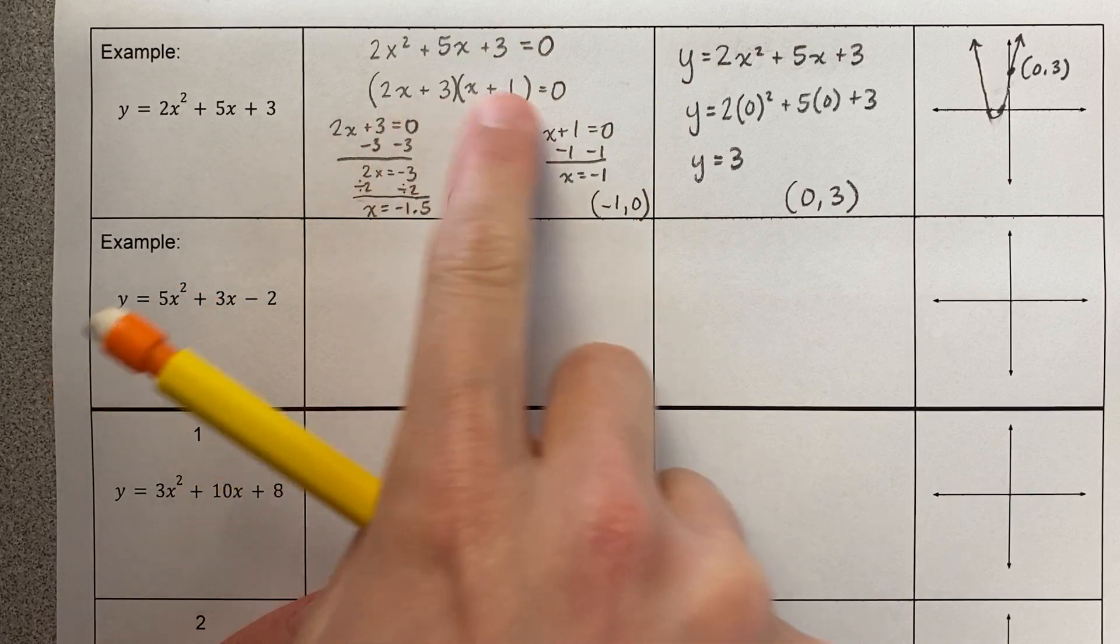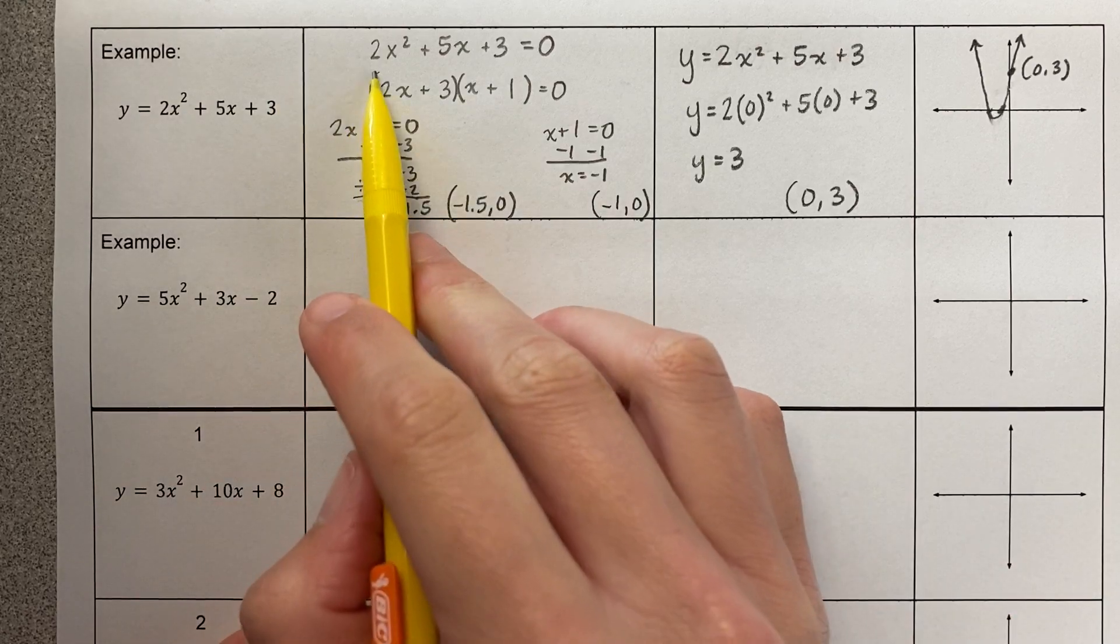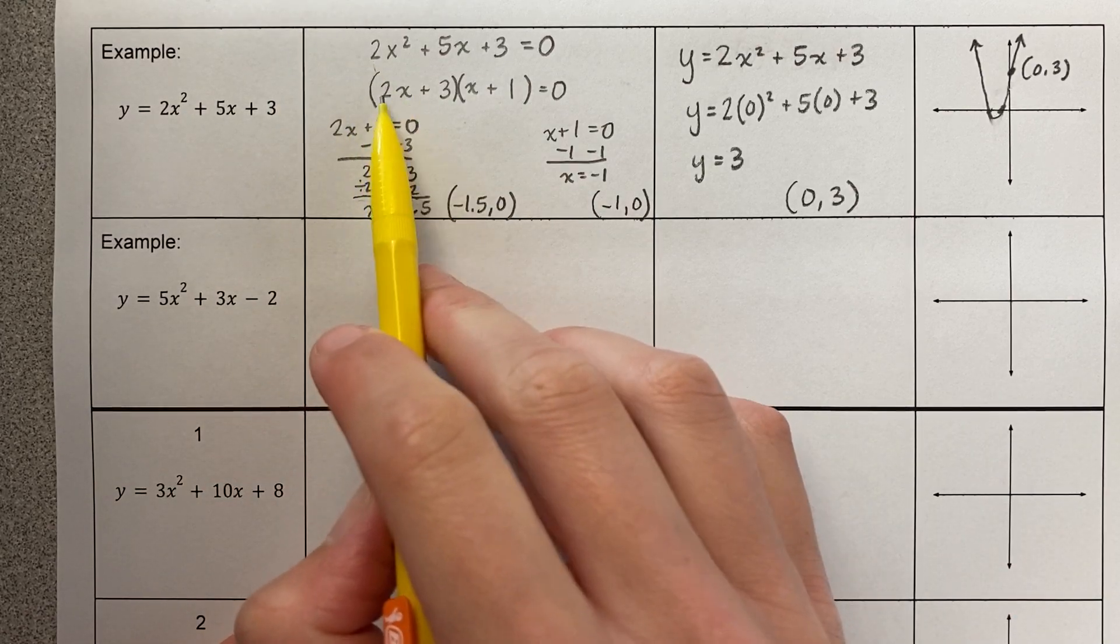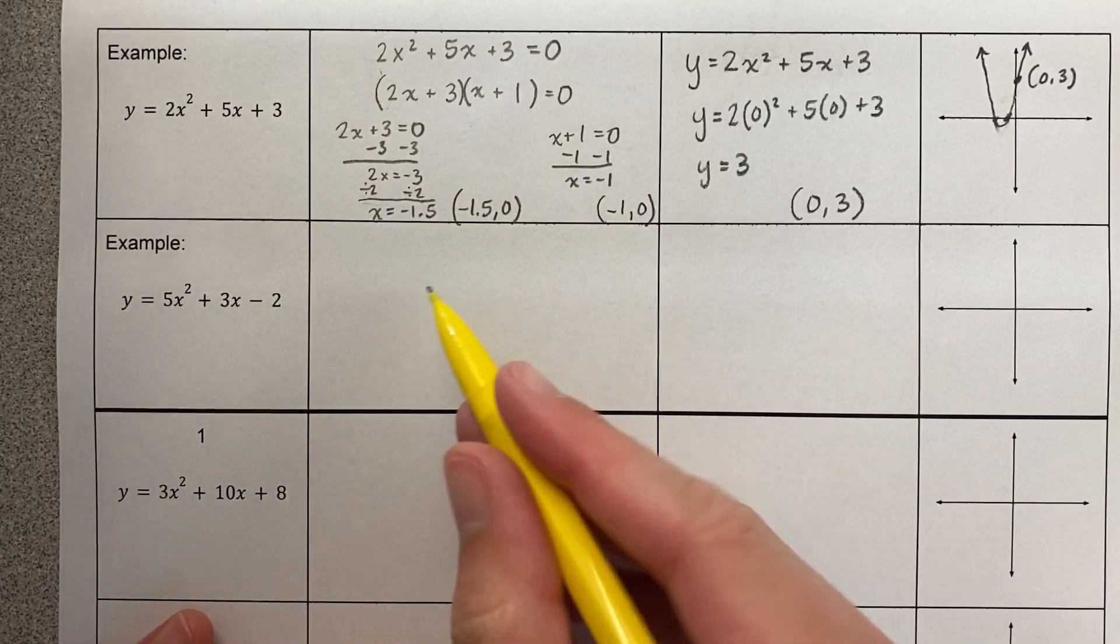I'm plugging in zero for y, I'm factoring, I'm solving. The only difference is because this number is not one, it's going to end up being that one of these numbers is not one, and so we're going to get some decimals.